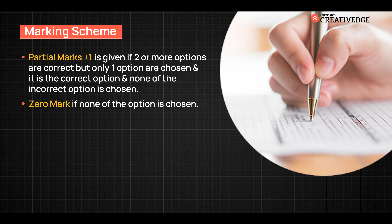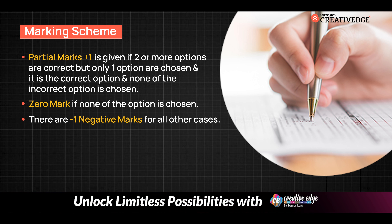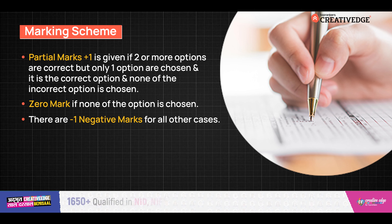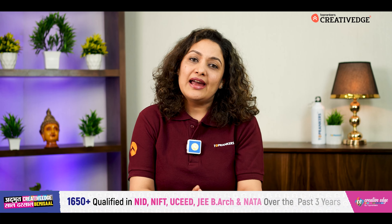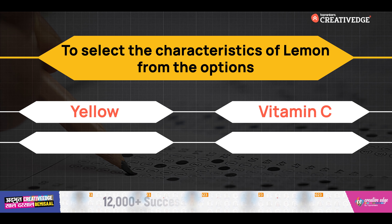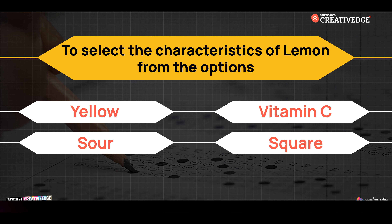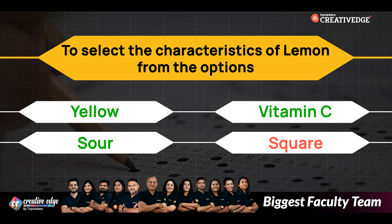Zero marks are given if none of the options are chosen, meaning you have not attempted the question. There is -1 negative marking for all other cases. For example, if asked to select the characteristics of a lemon from the options yellow, vitamin C, sour, and square — yellow, vitamin C, and sour are the correct characteristics of a lemon, while square is the wrong answer.